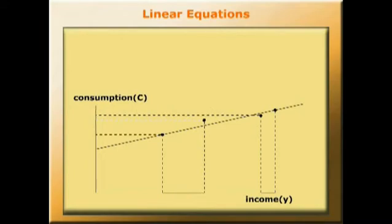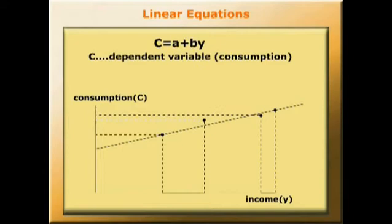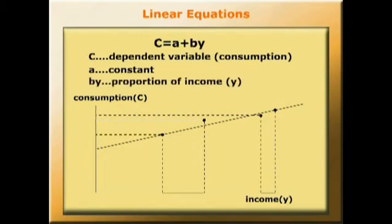Now, we can express this line in the form of a linear equation. And it has the form C equals A plus BY, where C is consumption, the dependent variable, A is a constant, and BY is some proportion of income Y.